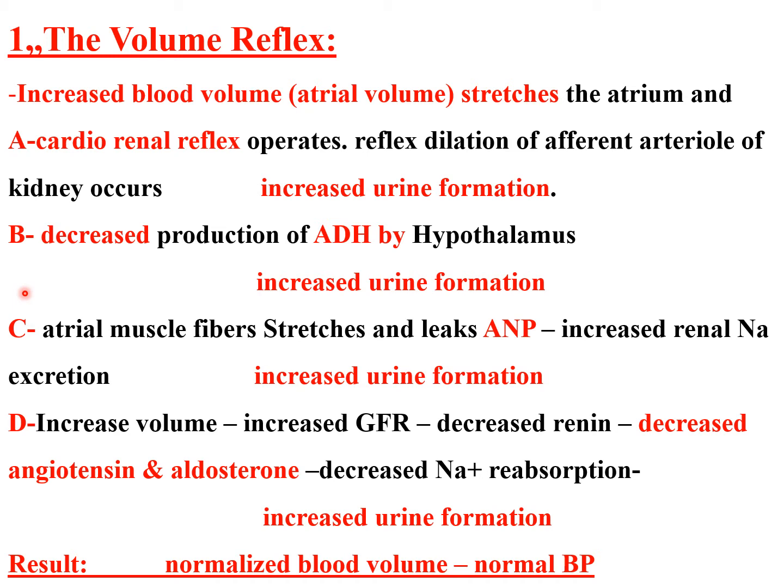Fourth (D): increased blood volume automatically increases GFR, which decreases renin. Without renin, angiotensin II and aldosterone are absent, decreasing sodium reabsorption. The resultant increased osmotic pressure of urinary fluid draws water with it, increasing urine formation. Through these four mechanisms of the volume reflex, the result is normalized blood volume and normal blood pressure.